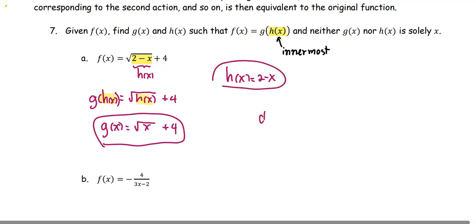Now let's check. When you compose g with h, it's going to be g of h(x) which is 2 minus x. Where g, we define it as square root of the input plus 4. Now we obtain the same as the given function f(x).